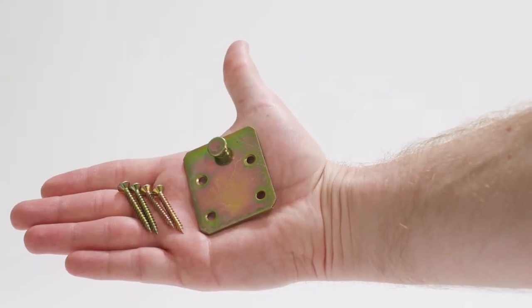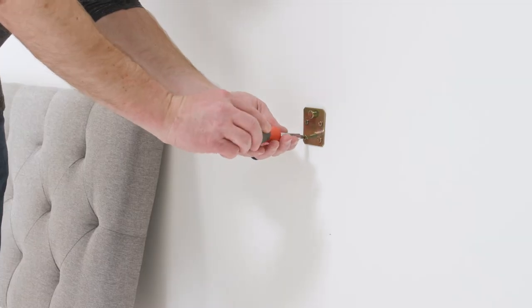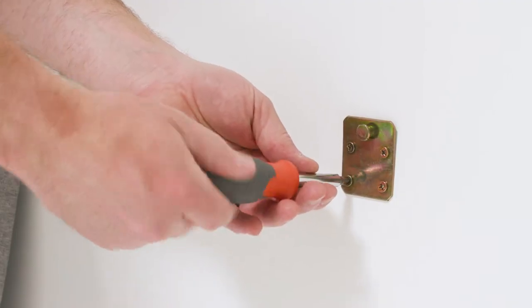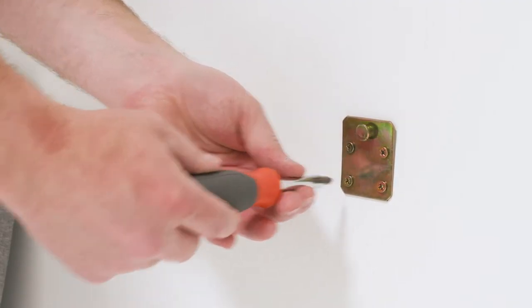Attach the male end of the brackets labeled H to the wall at your desired height using the screws provided. If not mounting to studs in the wall, use the included drywall anchors.